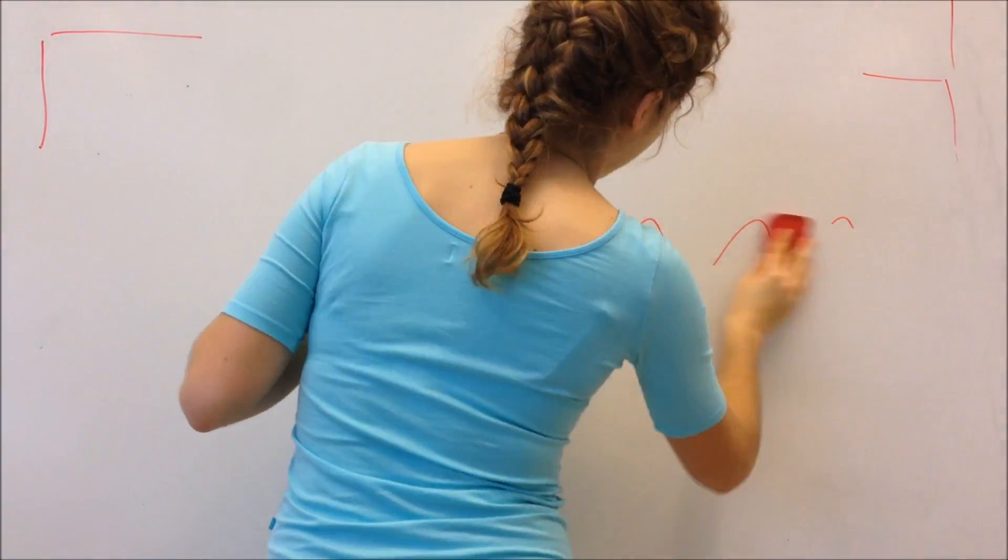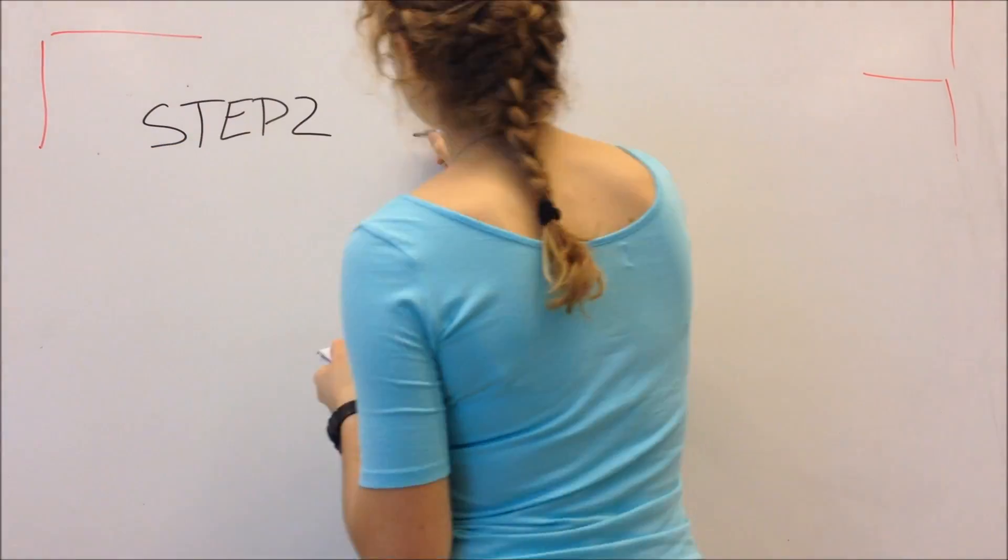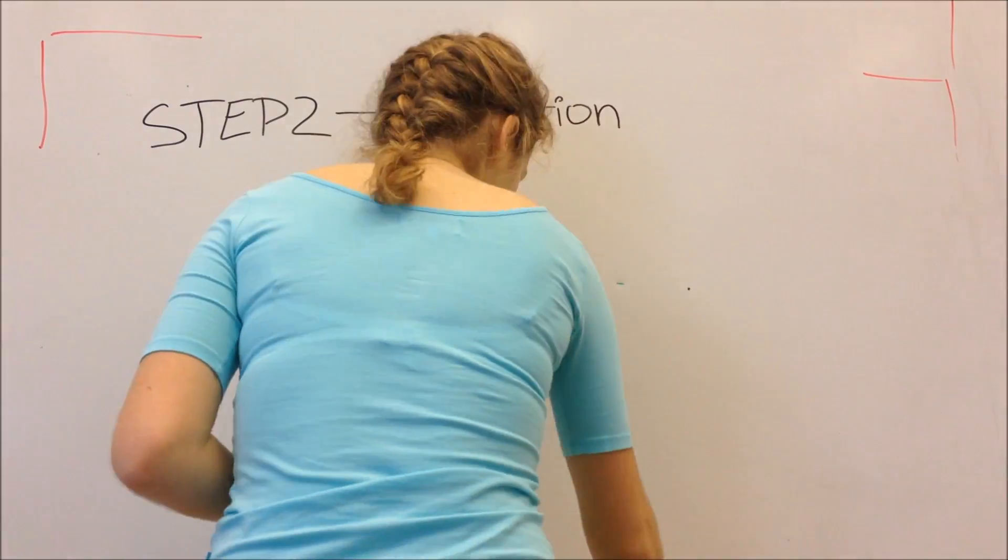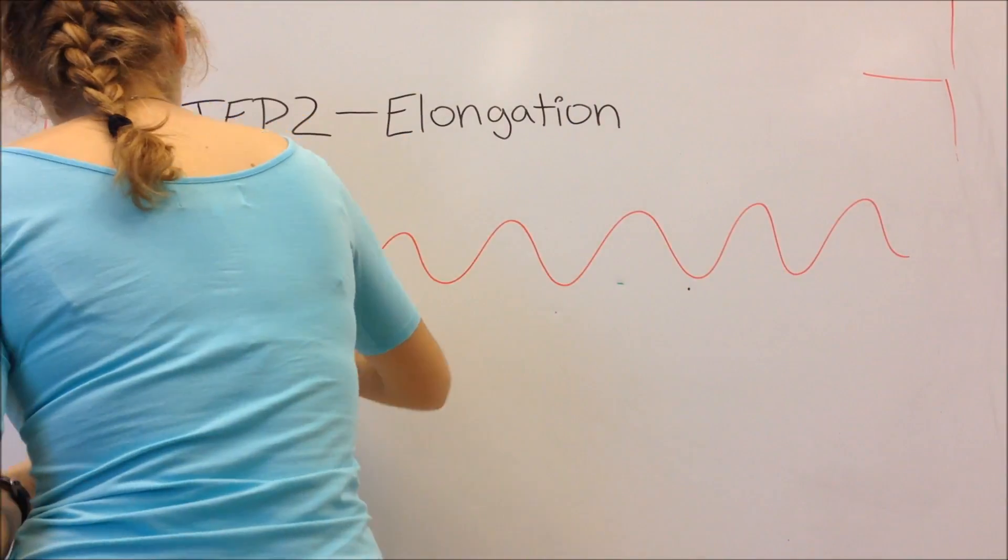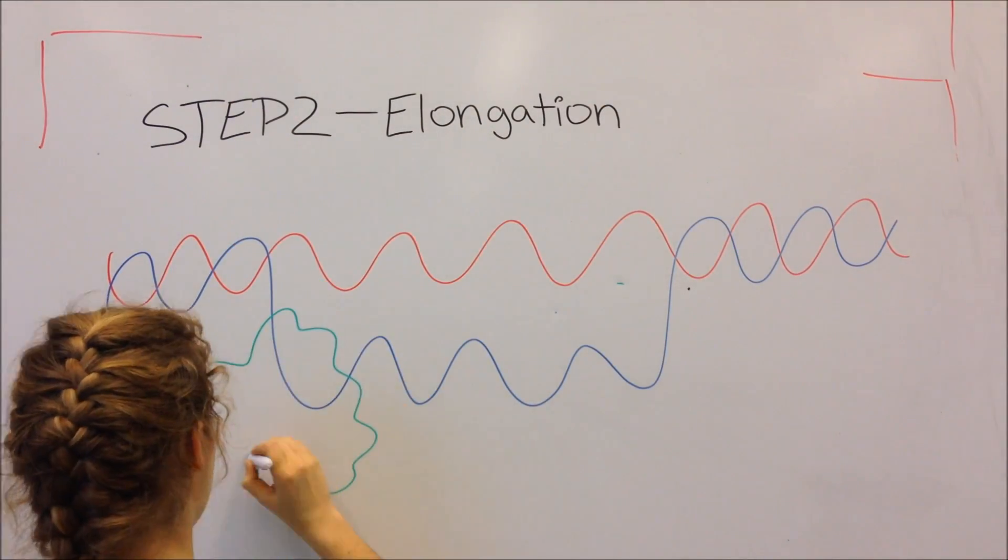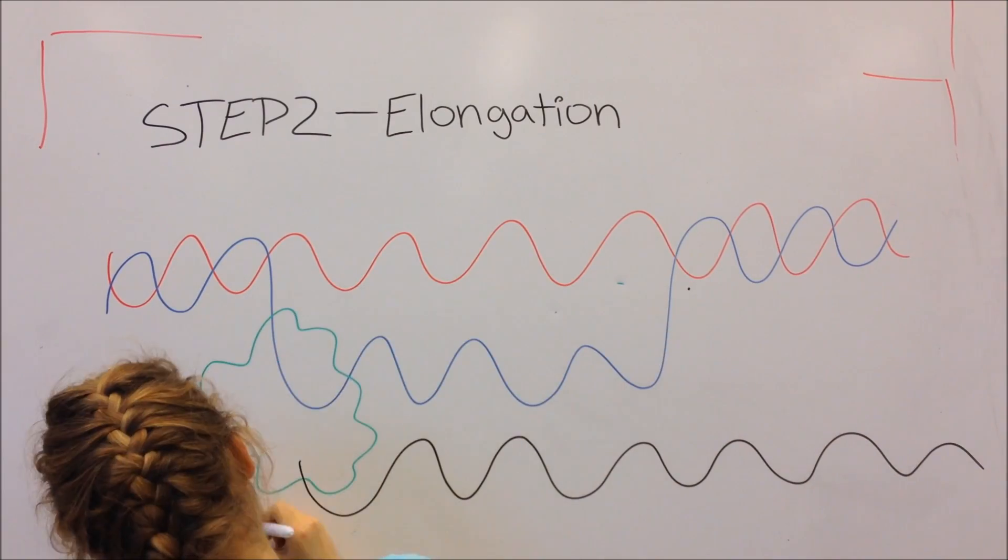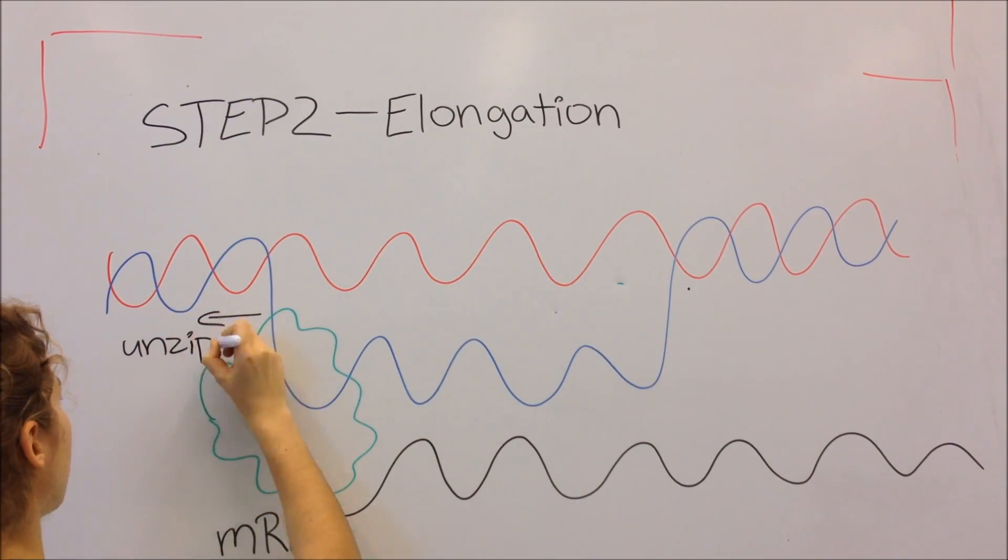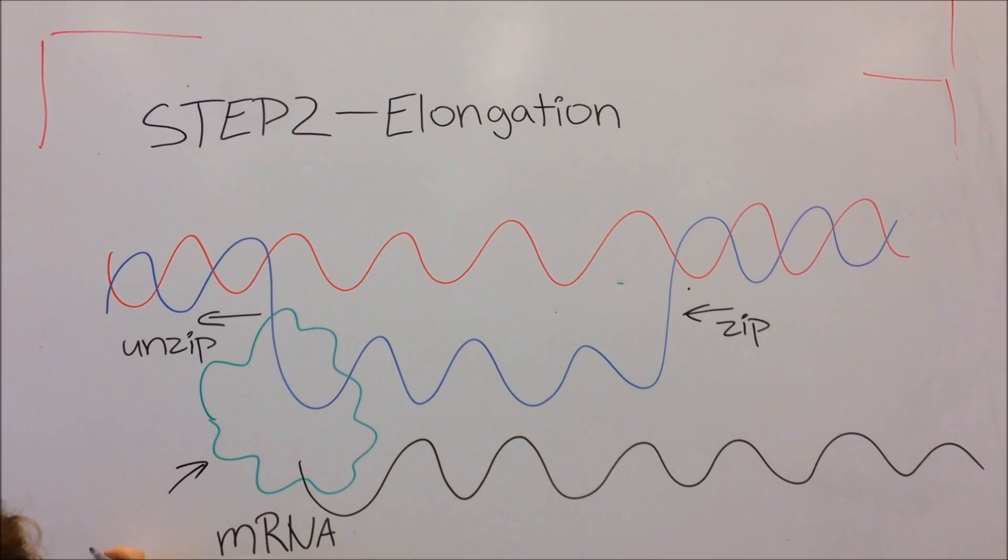The second step in transcription is the elongation process, basically the process in which messenger RNA is getting longer. In short, it's creating more bases. However, the RNA polymerase cannot create bases on its own, which is why subunits called nucleotides enter the polymerase and form individual bases.